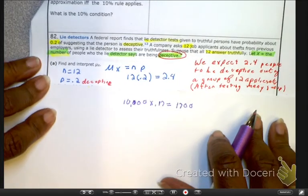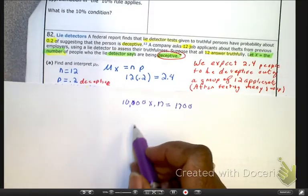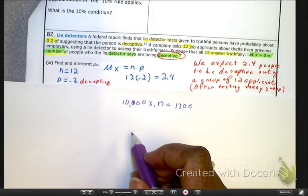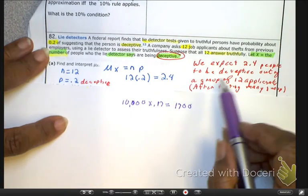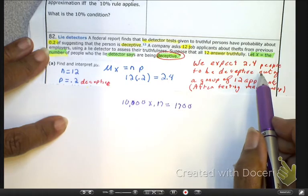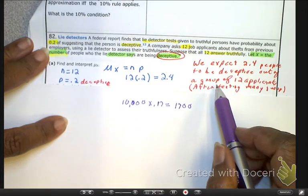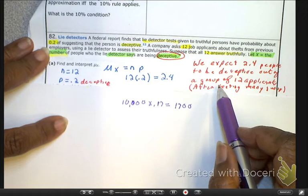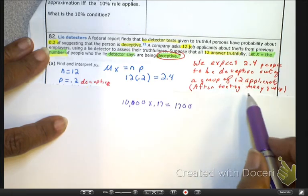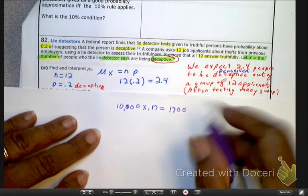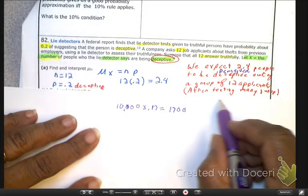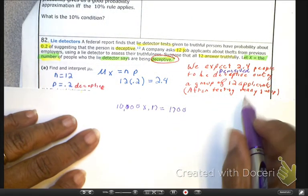Now, and as we do the interpretation, please remember, this is an expected count. This is how many people, how many applicants in this situation. So, we expect that 2.4% of the people to be perceived defective out of this group of 12 applicants. And I cannot forget the caveat that that's after testing many groups.